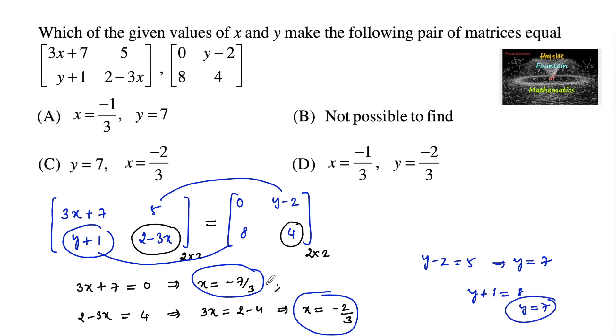But x values are not satisfying for elements a11 and a22. These two elements are not satisfied by the different values. So we can say that it is not possible to find. We can go with option B.